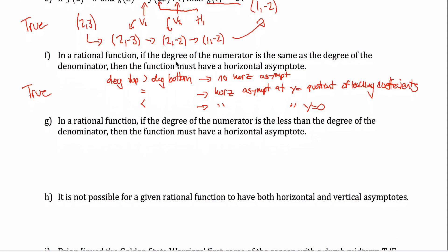Part G: in a rational function, if the degree of the numerator is less than the degree of the denominator, then the function must have a horizontal asymptote. That's also true — it's the third case from above. The horizontal asymptote will be at y equals 0. The only time you don't have a horizontal asymptote is when the degree of the numerator is greater than the degree of the denominator.